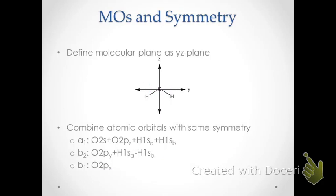The final orbital is the B1 orbital, which is just the 2px orbital on oxygen — the x-axis being perpendicular to the plane of the molecule. Because it is not combined with the 1s orbitals on hydrogen, it amounts to a non-bonding orbital.